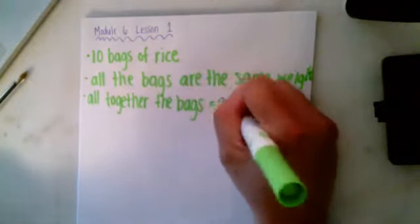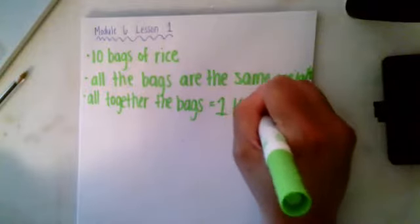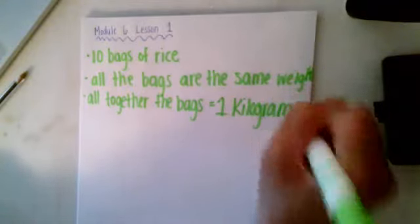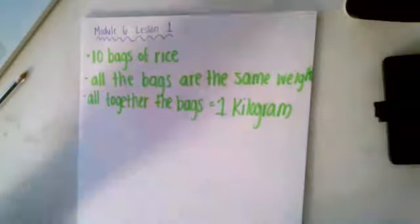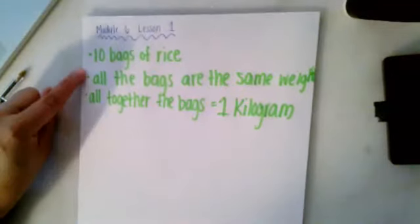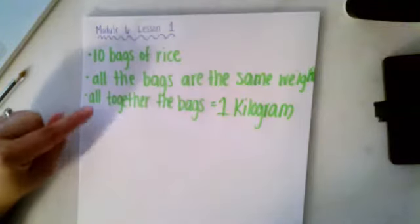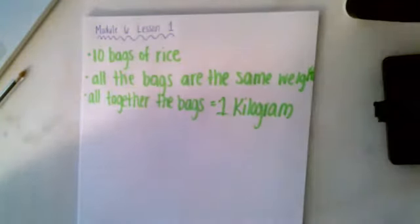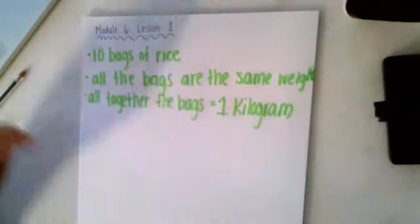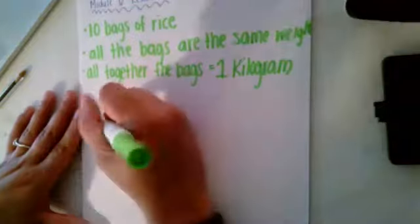All together, the bags weigh one kilogram. So here are my three bullet points: 10 bags of rice, all the bags are the same weight, and all together the bags are one kilogram. I'm going to represent this information as a tape diagram.